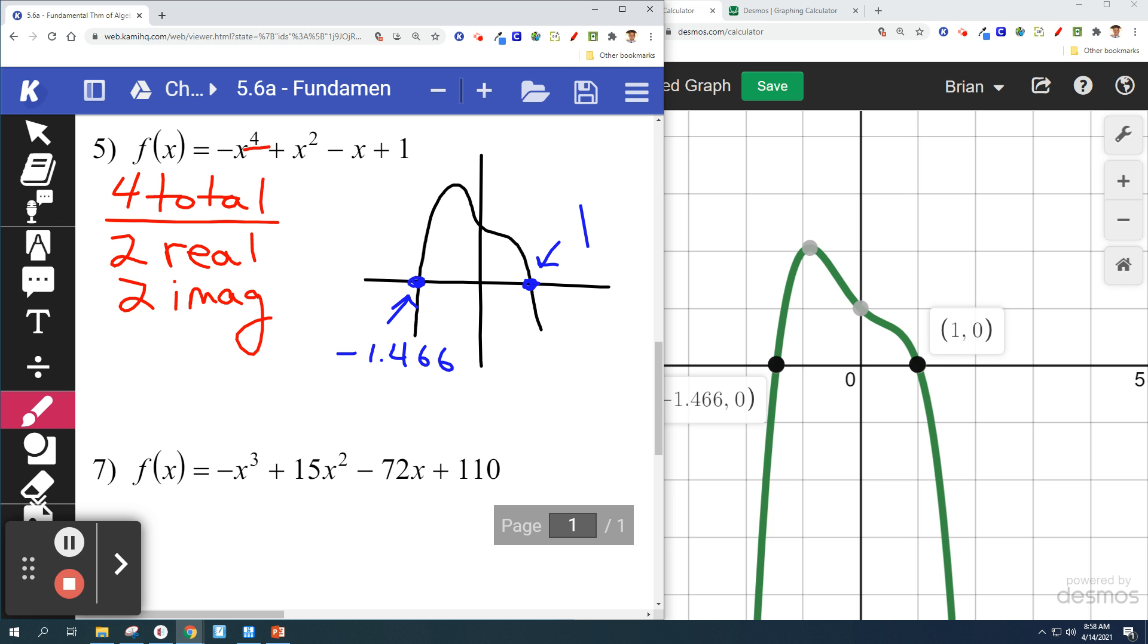Now, remember. Remember what imaginary means. Imaginary means that there's going to be the letter i in there. Or there's going to be a square root of a negative. We've dealt with that before. But anytime there's an imaginary, it's because there's a square root of a negative. Your calculator won't even handle that. That's going to be imaginary. And we can't see them on the graph.